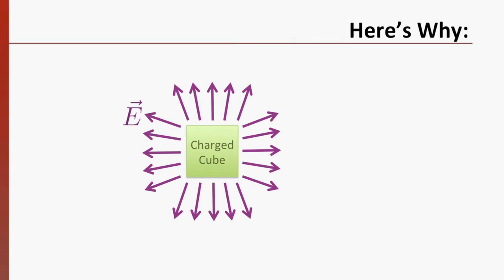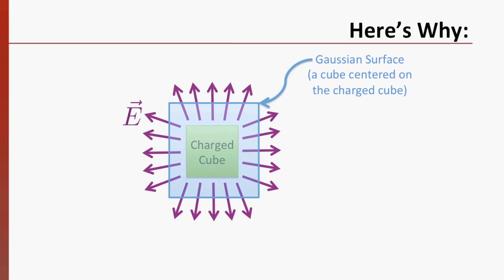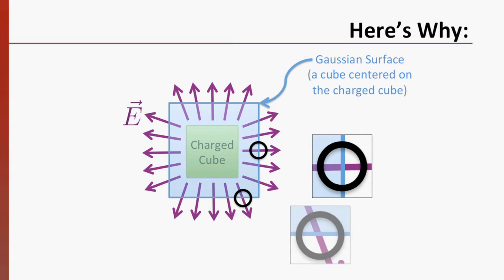Let's say we have a charged cube, which is certainly a symmetric object. We can draw the field from it fairly easily. If we place a cubical Gaussian surface around the charge, we can see the problem. The field and the surface have different angles in different places. There's some symmetry here, but not enough to allow us to pull everything out of the integral.